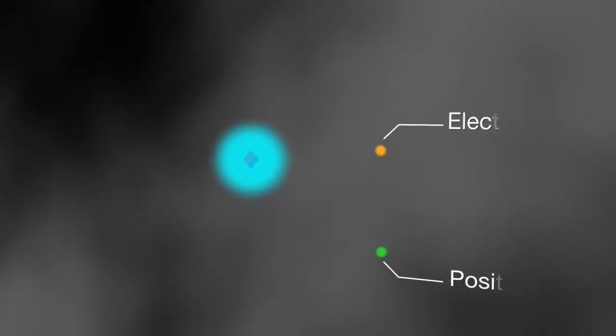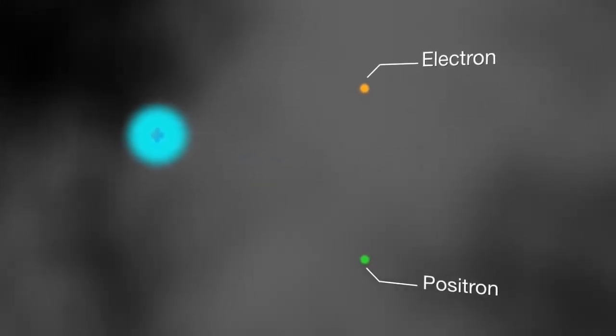Very rarely, one of these gamma ray photons grazes an atom and transforms into a pair of particles. One, an electron, is normal matter. The other is antimatter, the electron's opposite, called a positron.